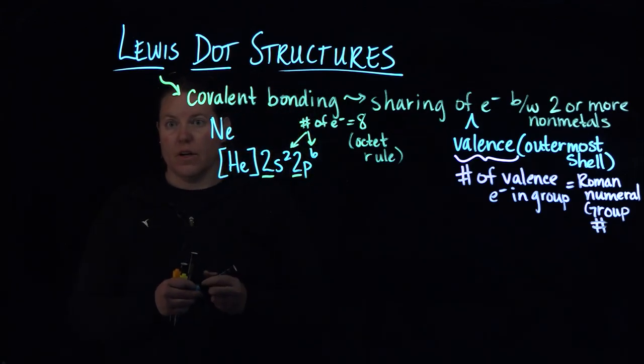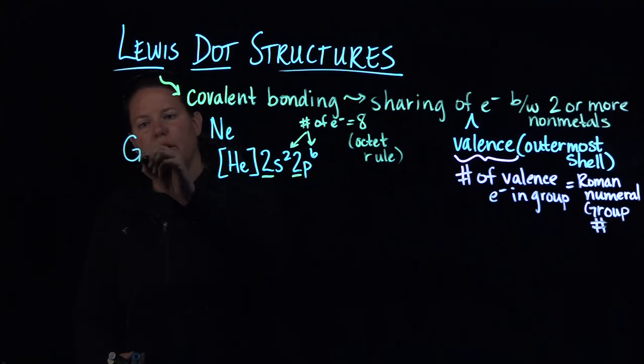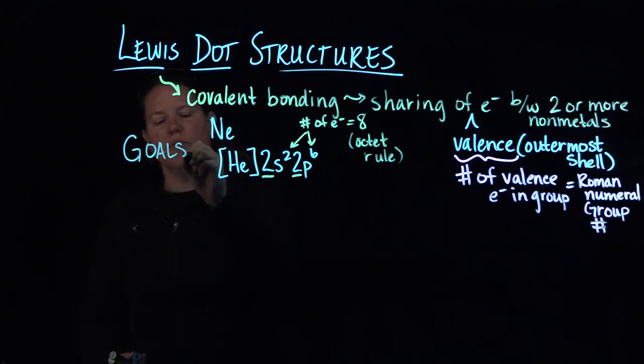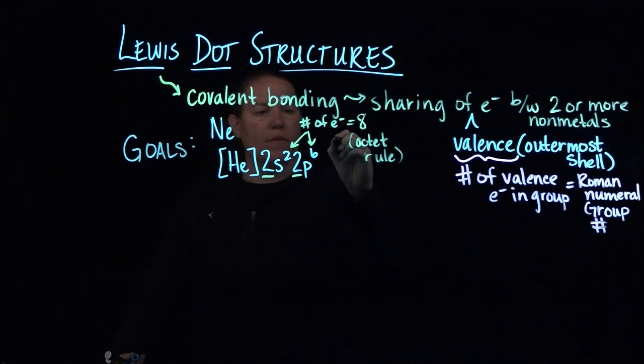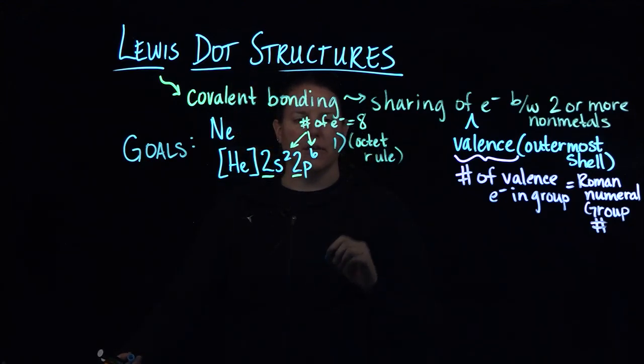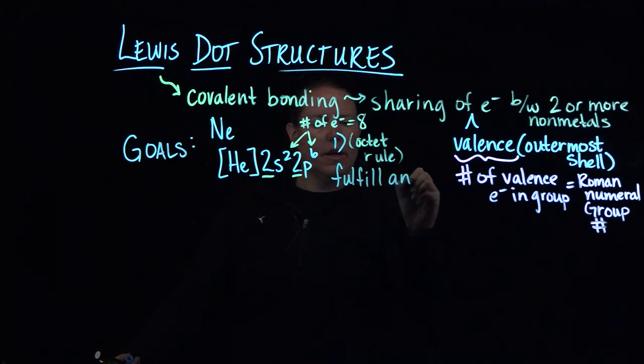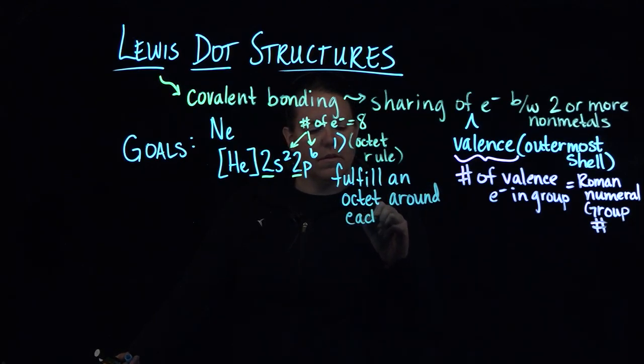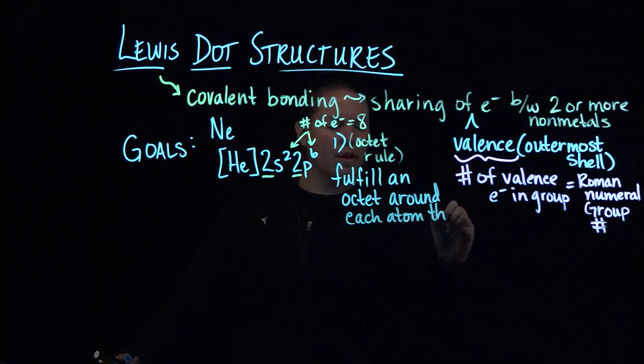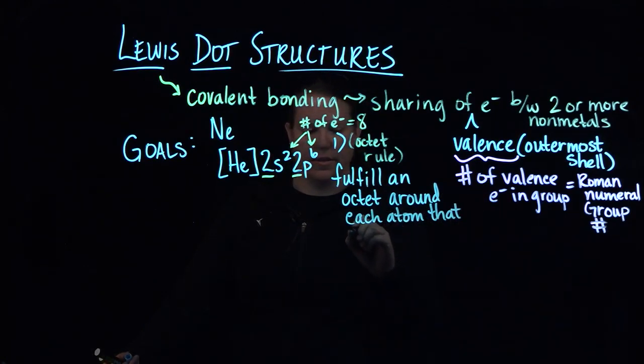The octet rule is actually one of a couple of our goals, right? So we have some goals that we're working towards. One of them is the octet rule and the way we put this is we say we want to fulfill an octet around each atom.